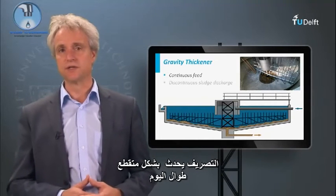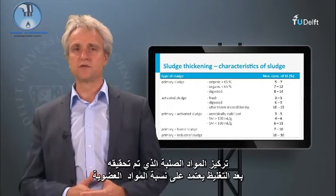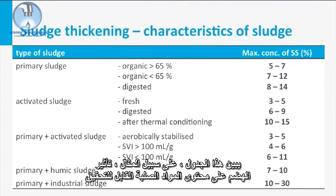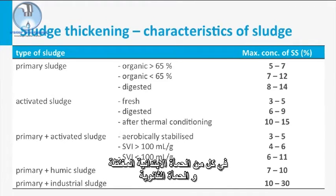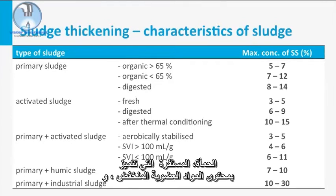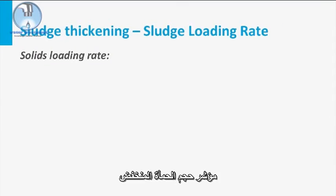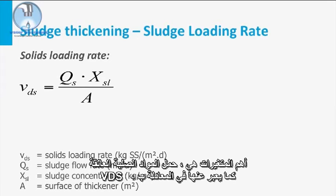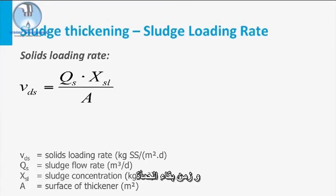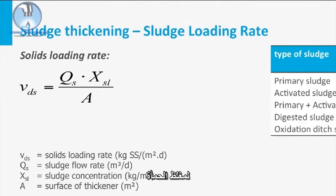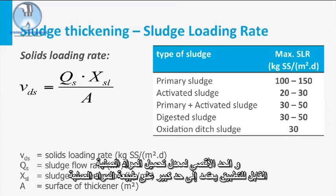The discharge takes place discontinuously throughout the day. The achievable concentration of suspended solids after thickening depends on the organic fraction of the sludge. This table shows the impact of digestion on the achievable solids content of both thickened primary sludge and secondary sludge. The general observation is that the highest dry solids concentrations can be achieved with stabilized sludge, characterized by a low organic matter content and a low sludge volume index. In terms of design, the most important variables are the suspended solids load — expressed as VDS in the formula — and the sludge retention time. QS stands for sludge flow rate, XSL is the sludge concentration, and A is the surface area of the thickener. The applicable maximum solids loading rate largely depends on the nature of the solids, as indicated in this table.